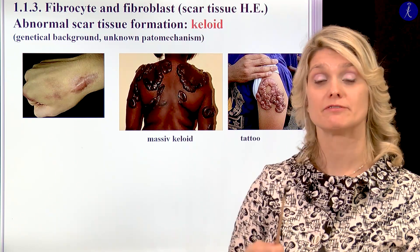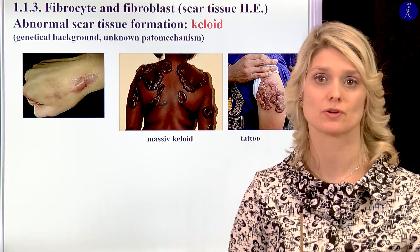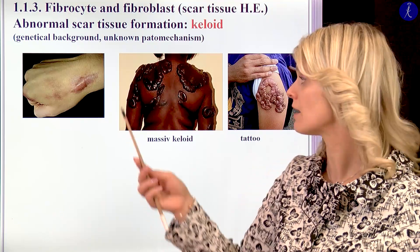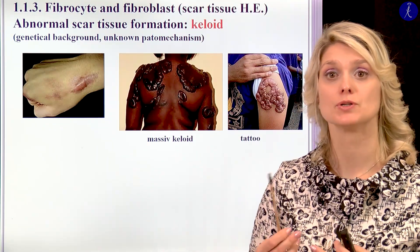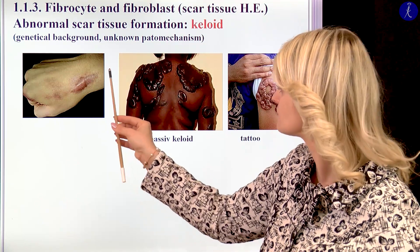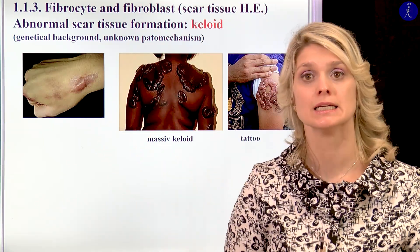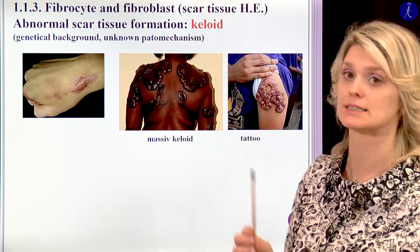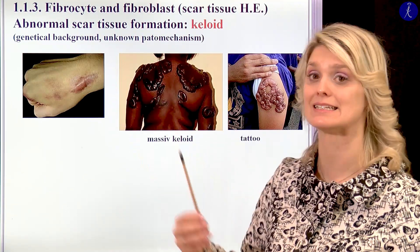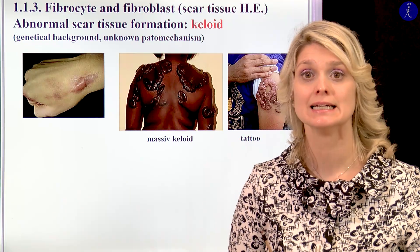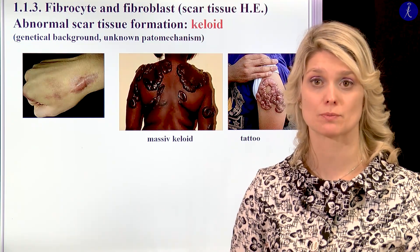I think you know that if we have a problem with the inactivation of these fibroblasts after an injury, you have an abnormal shaped scar tissue in the skin, which is called the keloid. The keloid could have a genetic background, but we do not know exactly what the pathomechanism is. We know that people who have darker skin could have this abnormal healing procedure much more frequently.